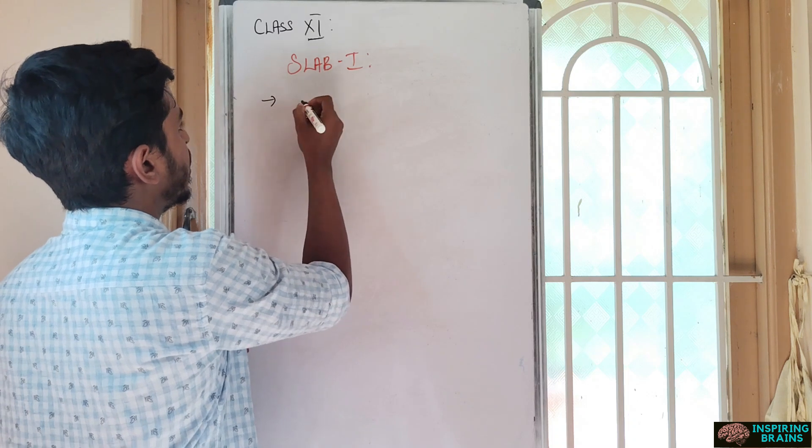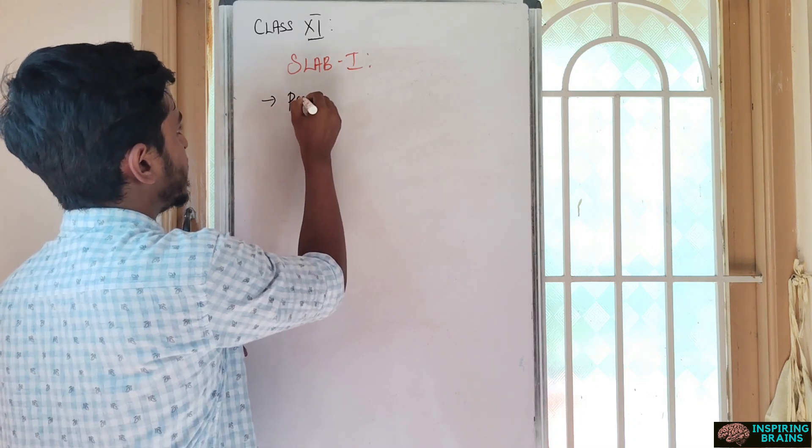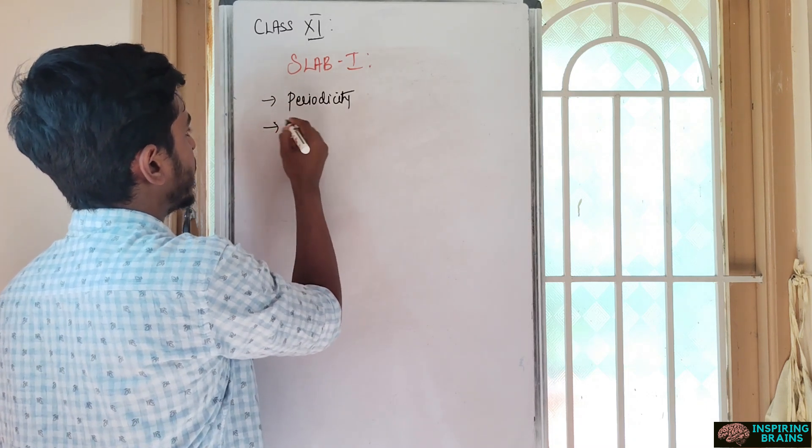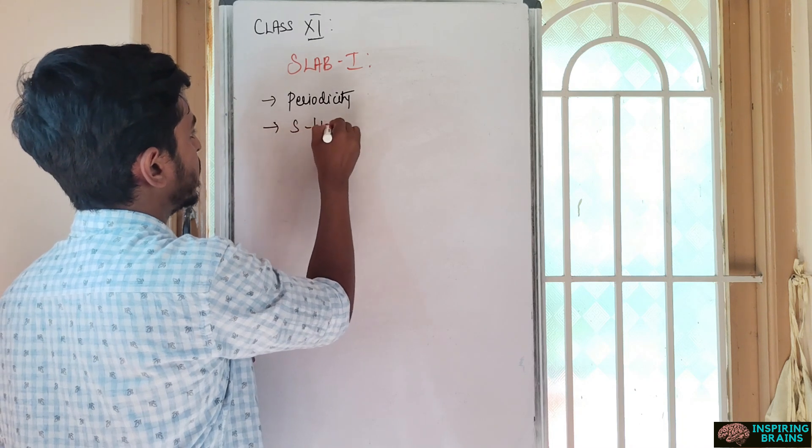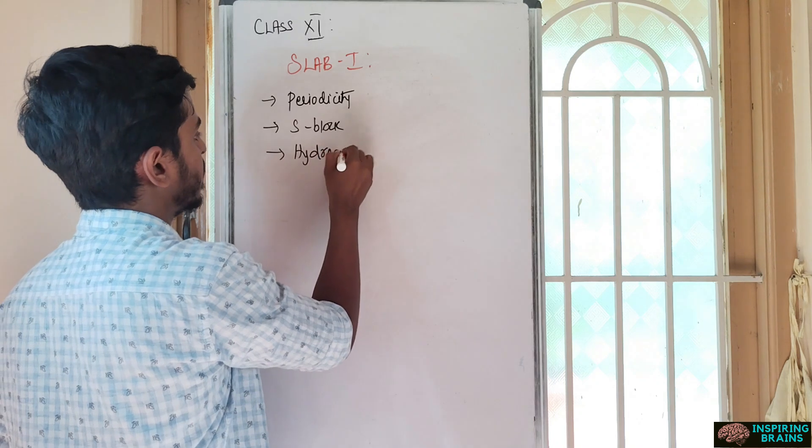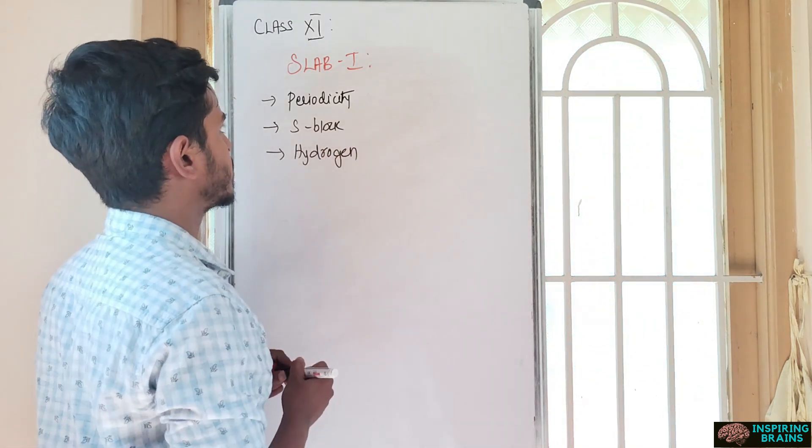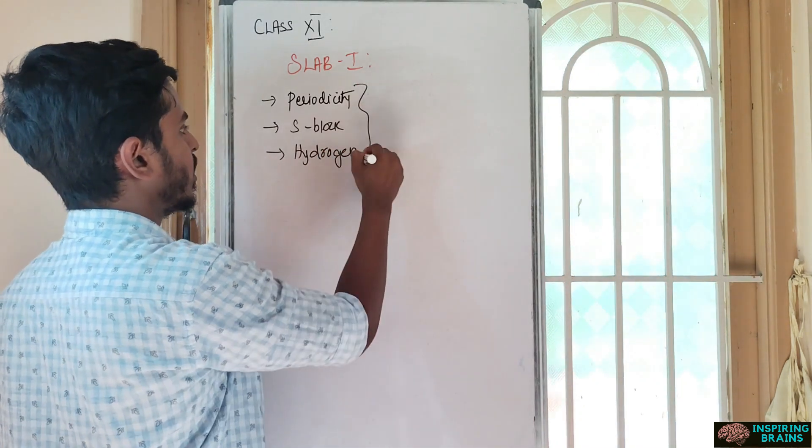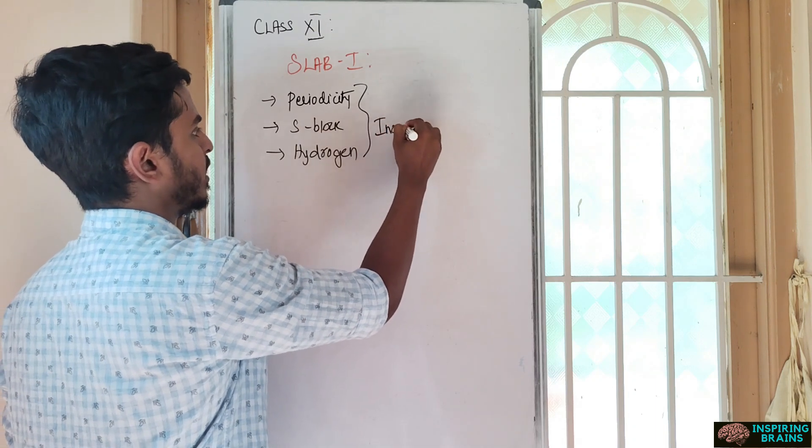Slab one inorganic - you can go with periodicity, then S block, then hydrogen. These are all easiest units for inorganic.